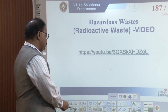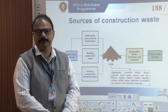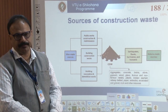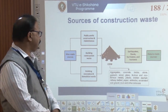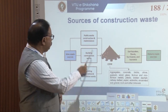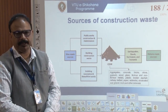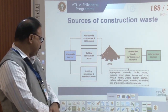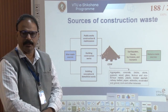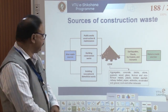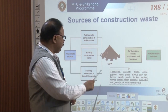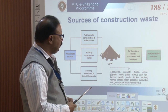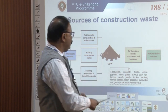Now we will start construction waste — the last part of the fourth module. Sources of construction waste: you can see the different sources — man-made sources, public work construction, building maintenance, building construction work, building demolition and renovation work. It may be man-made, public construction, construction demolition work, earthquake, flood, and tsunami — natural sources. These are all sources.